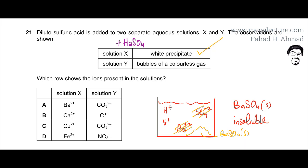because group 2 compounds are always white. So this is correct, white precipitate would be formed. BaSO4 is going to be a white solid.